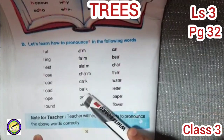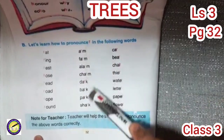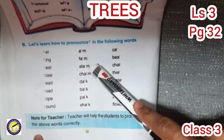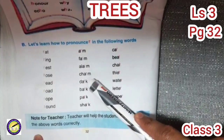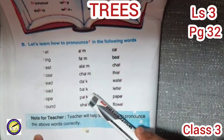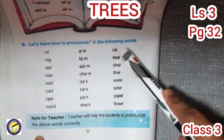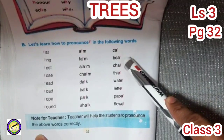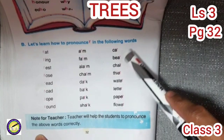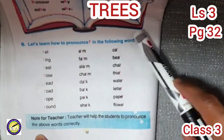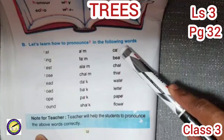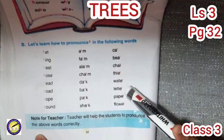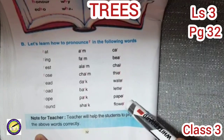When R comes in between a word, it is silent and gives no sound — for example: arm, farm, alarm, charm, dark, bark, park, shark. When R is at the end, it is again not giving the sound of R; instead it gives the sound of 'uh' — like car, beer, chair, there, water, letter, paper, flower.